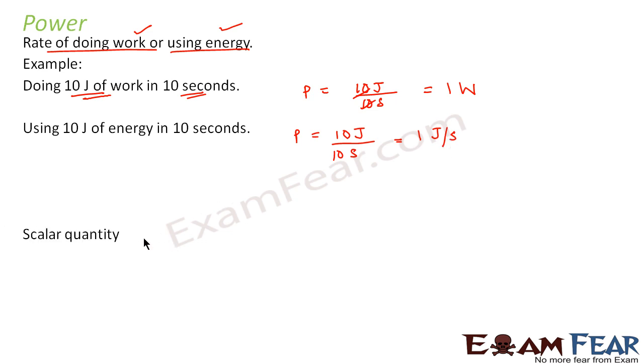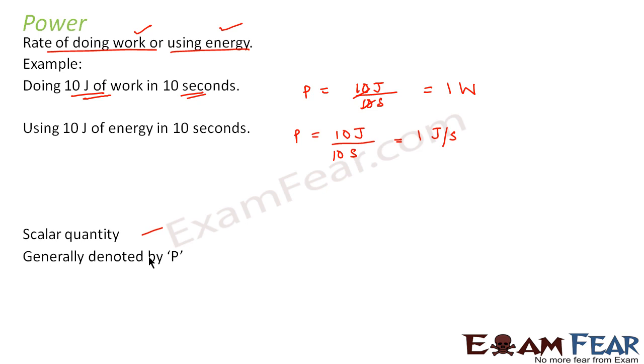Power is a scalar quantity — it has only magnitude, no direction. It is generally denoted by capital P. The SI unit of power is the watt.